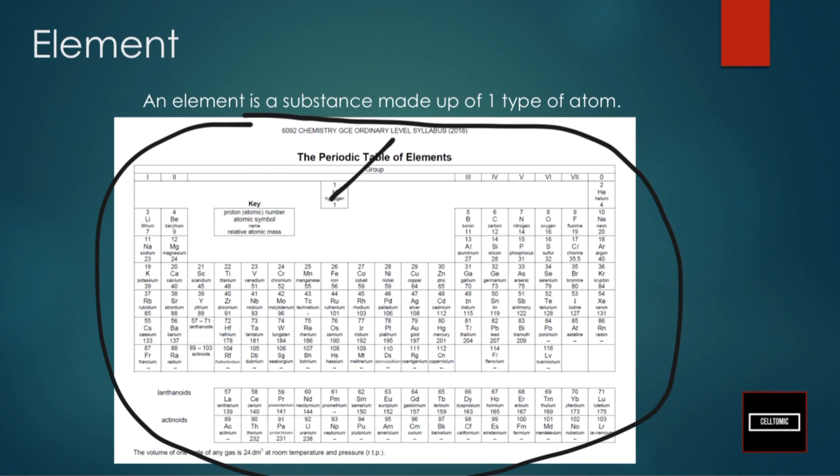So we have hydrogen, we have helium, we have boron, oxygen, we have argon, copper, and then we have mercury here, gold here, platinum. So everything here is an element.